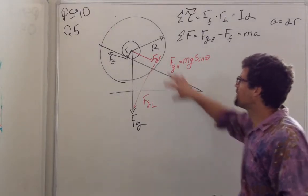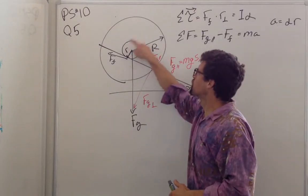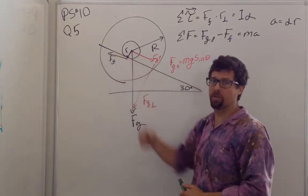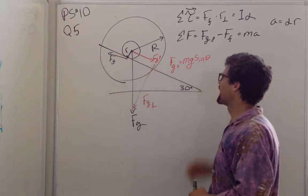For question number five, we have the same flywheel with a smaller hub rolling down without slipping, so we have frictional force here, rolling down this incline.